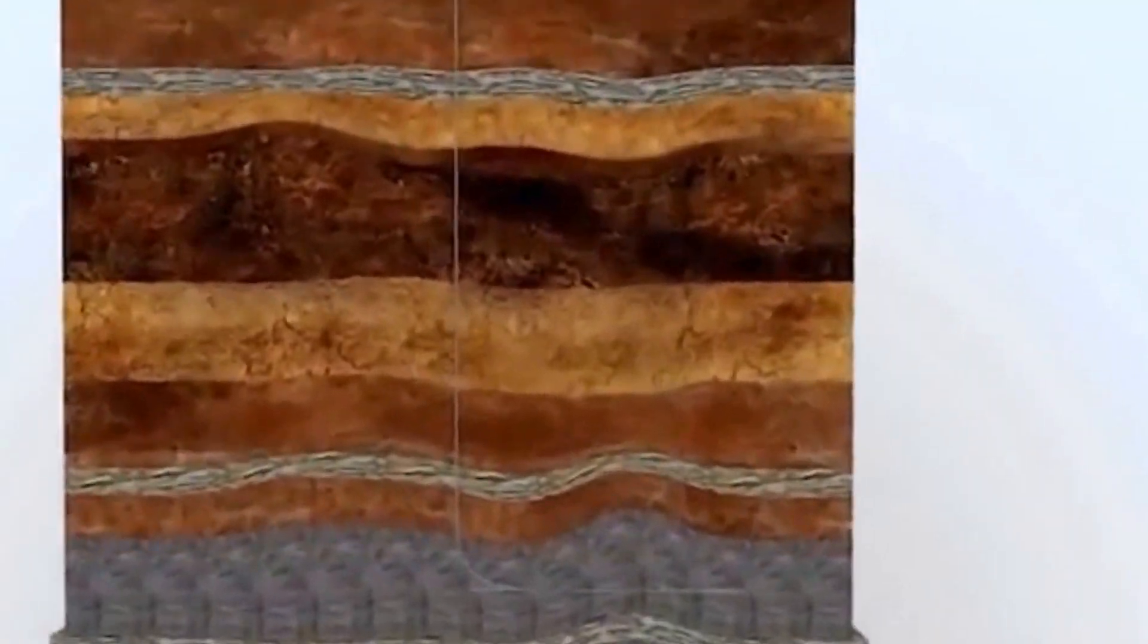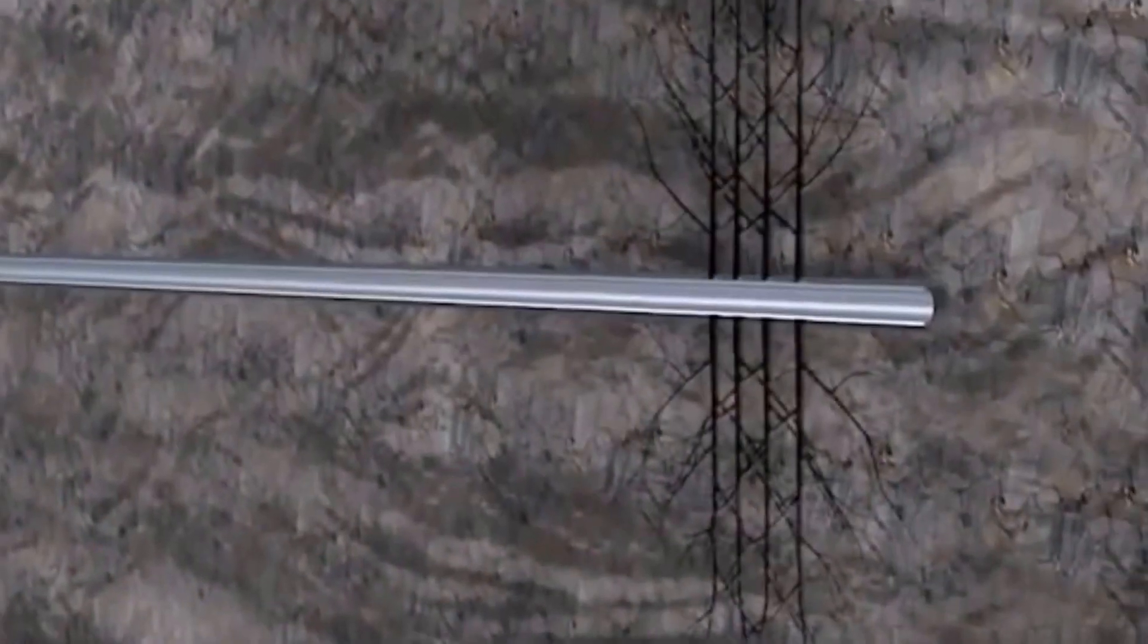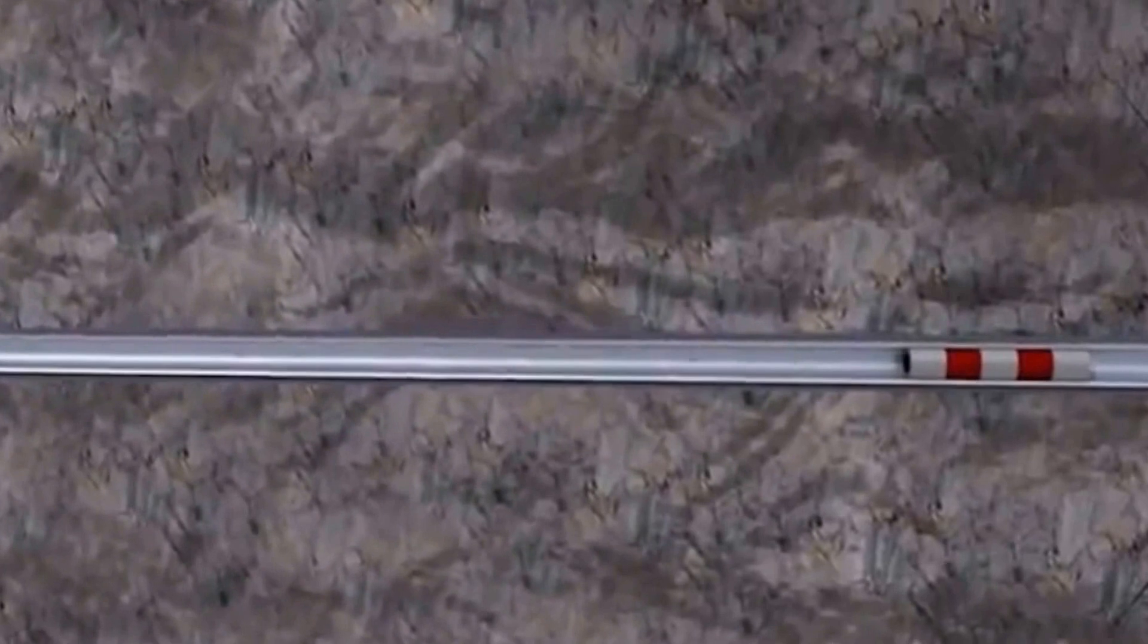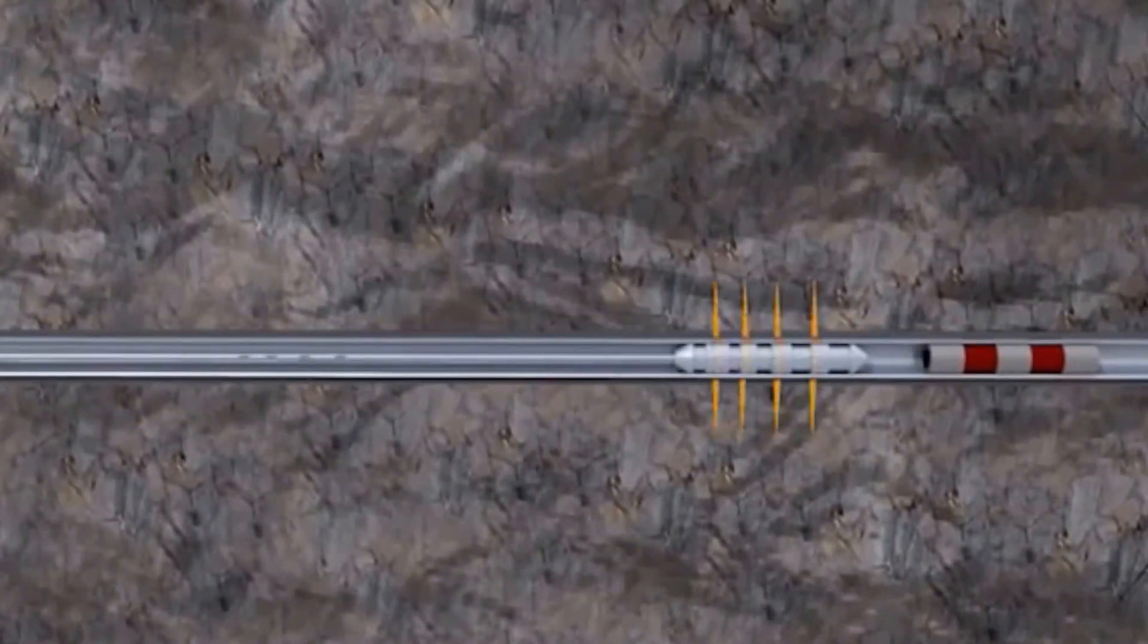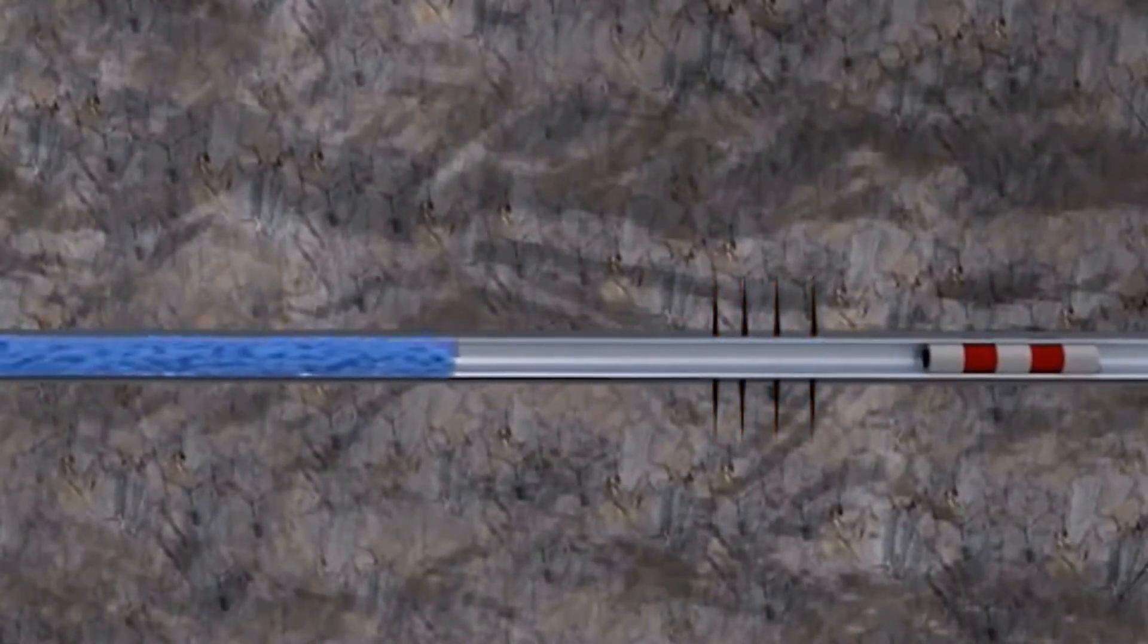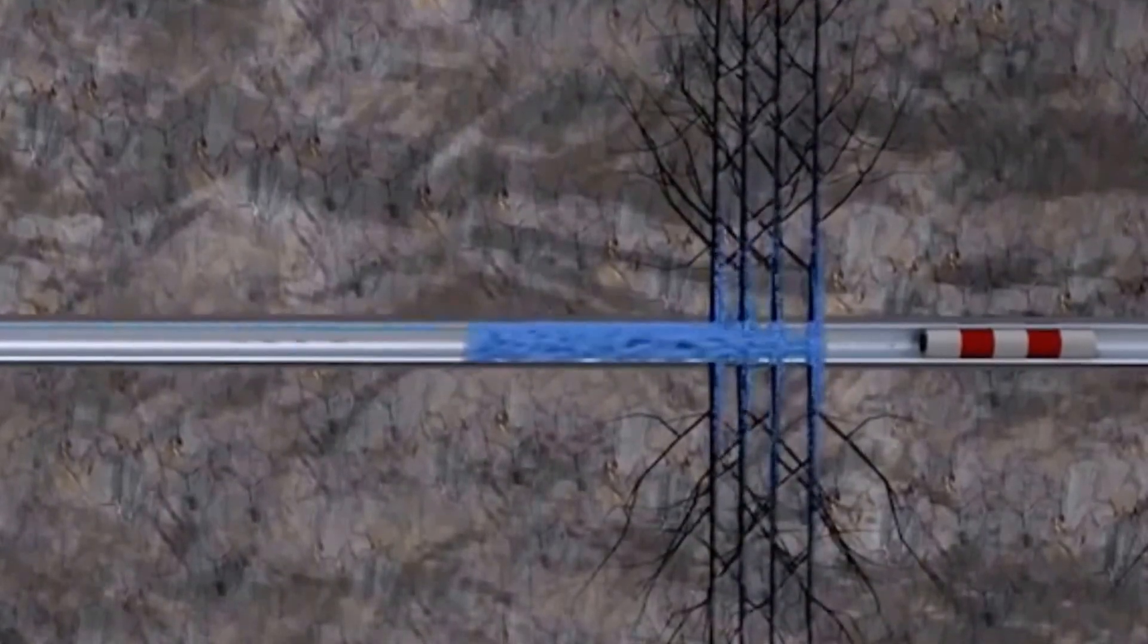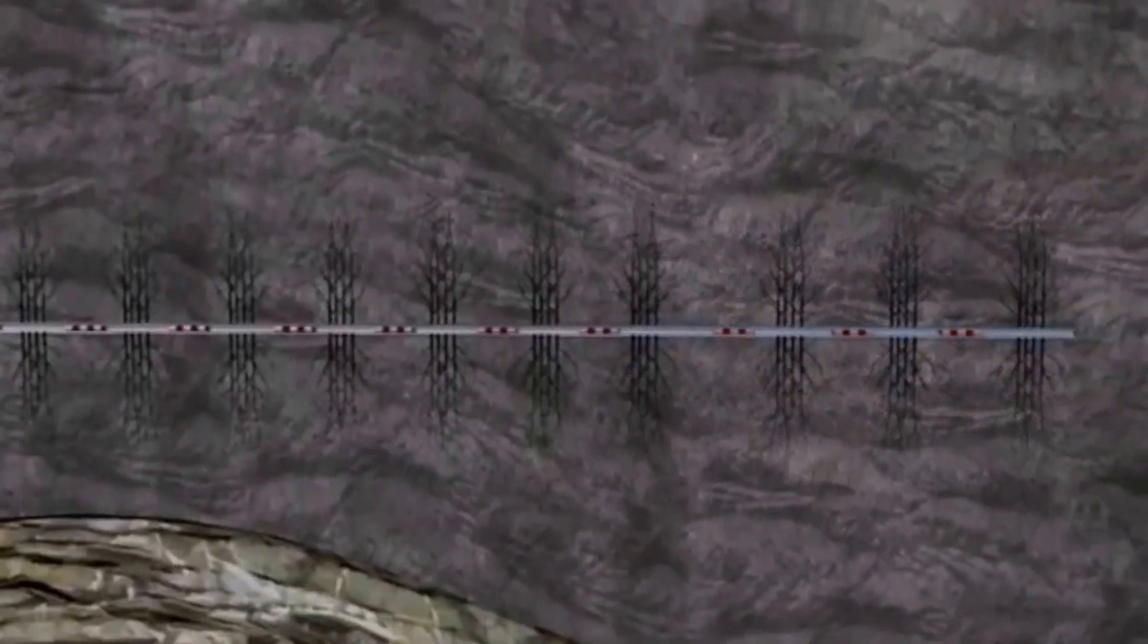This initial stimulation segment is then isolated with a specially designed plug, and the perforating guns are used to perforate the next stage. This stage is then hydraulically fractured in the same manner. This process is repeated along the entire horizontal section of the well, which can extend several miles.